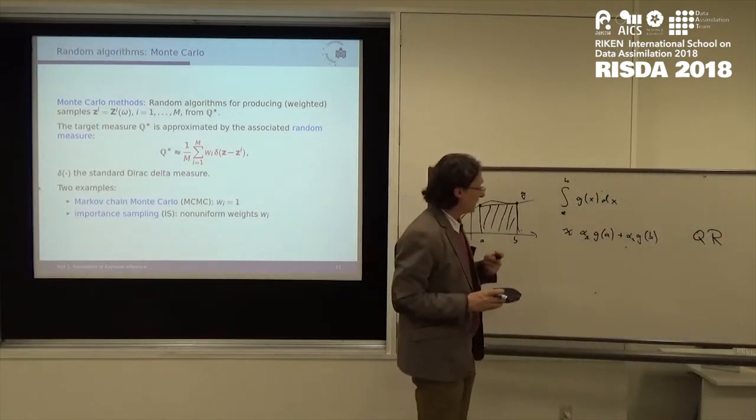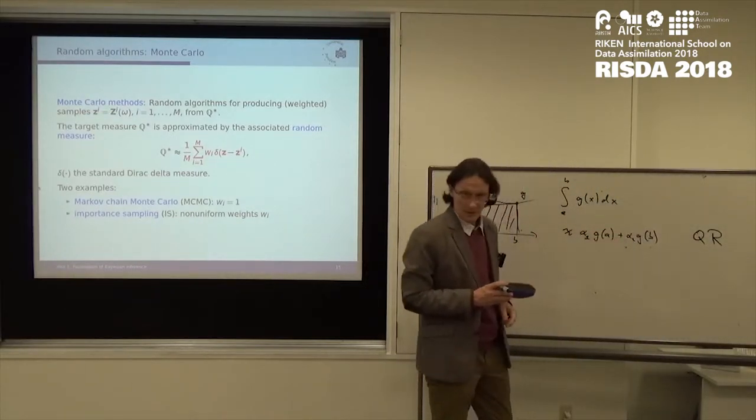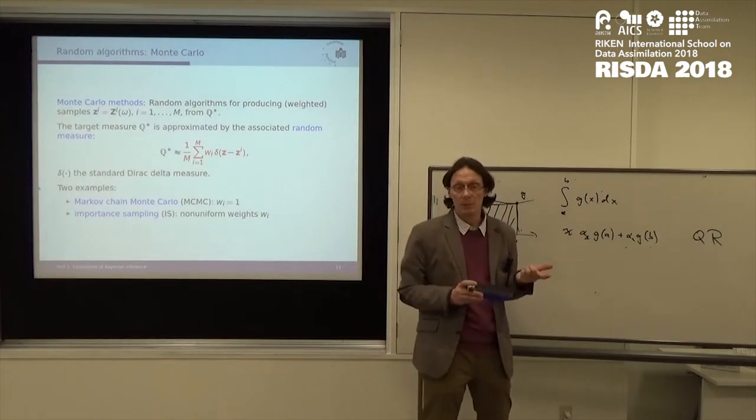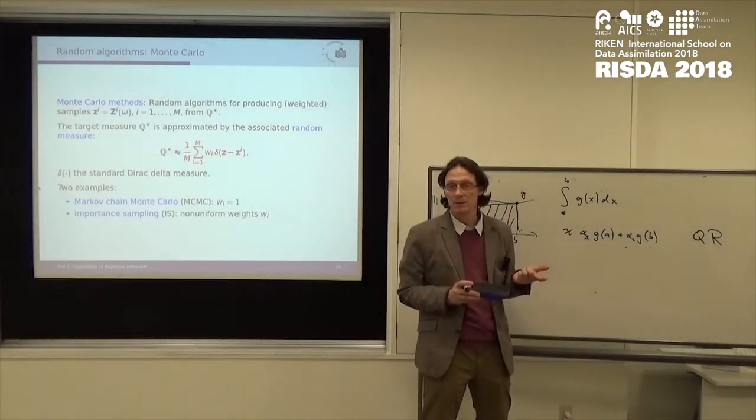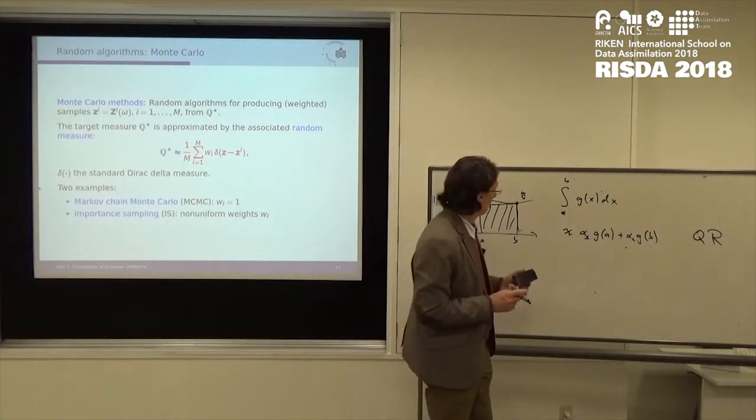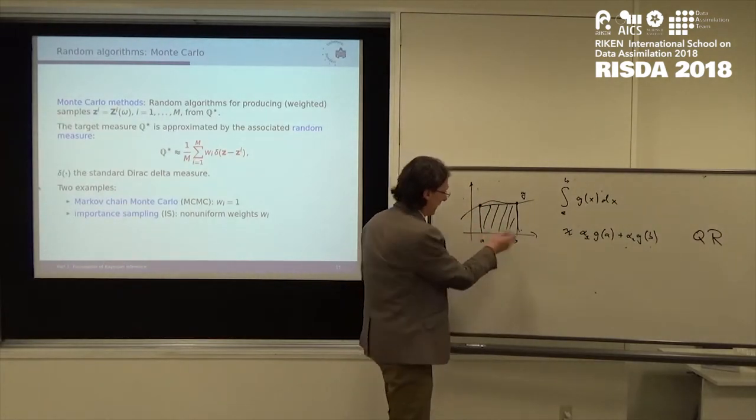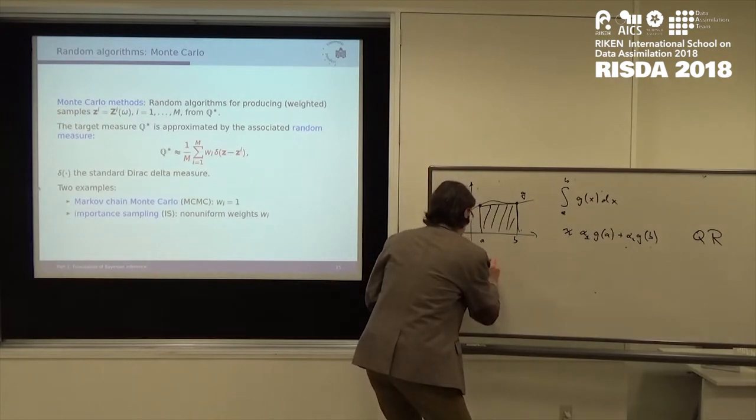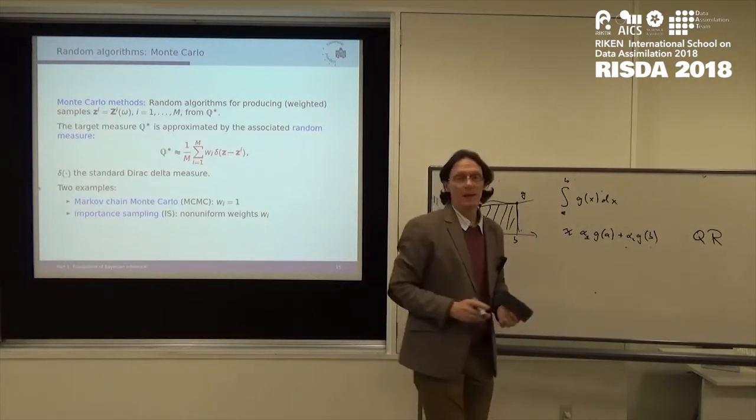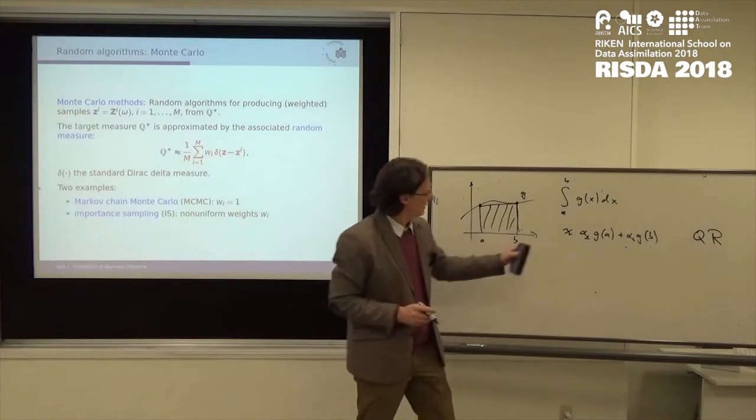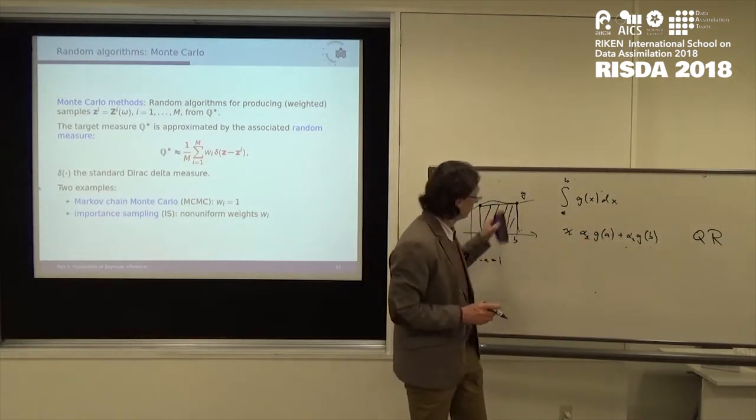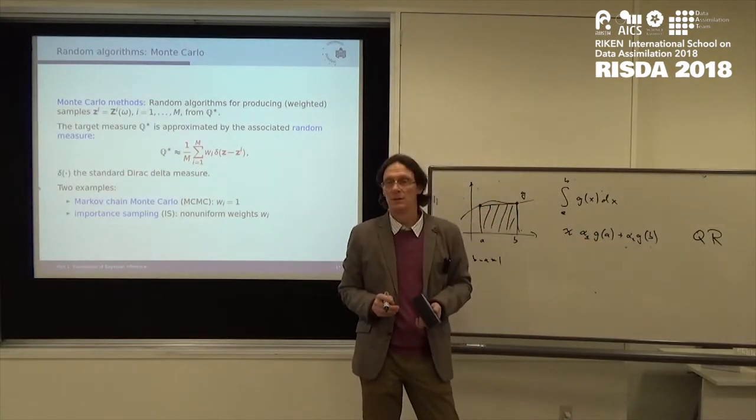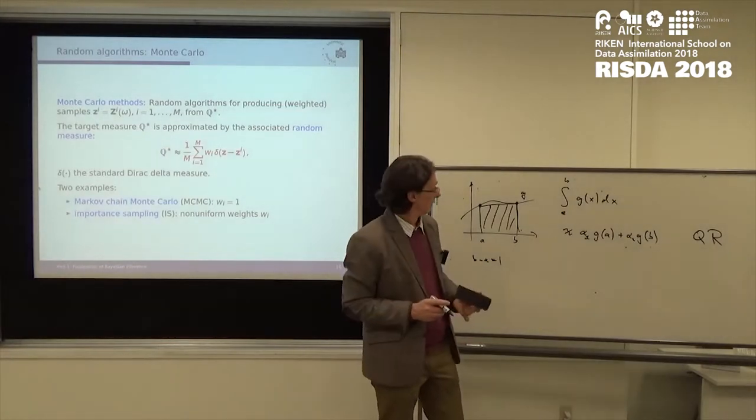But basically, you see there are two ingredients. There are these weights, which in this case are each, what value do they take? I mean, if you want to approximate it and let's say A and B is interval length is one. Then what are the weights? How do you have to weight these two values here? All right.